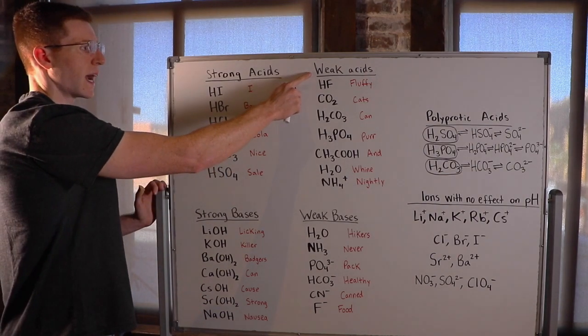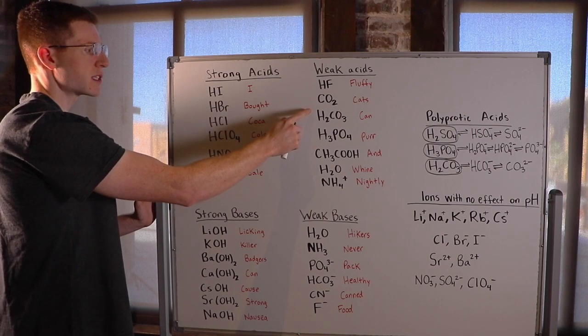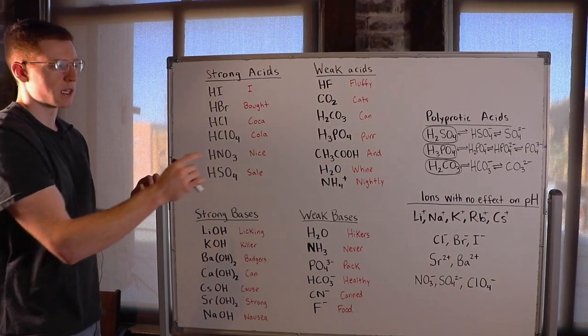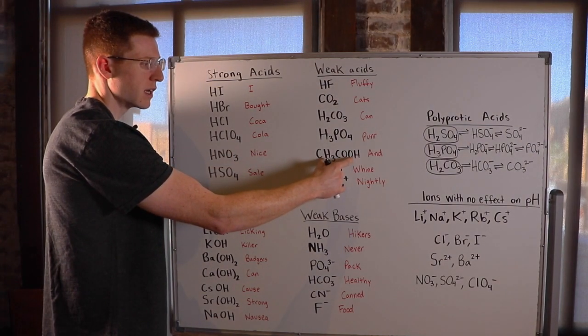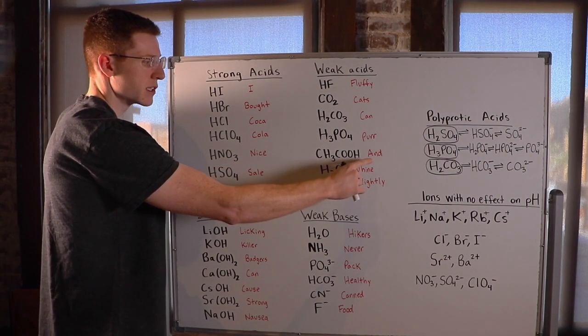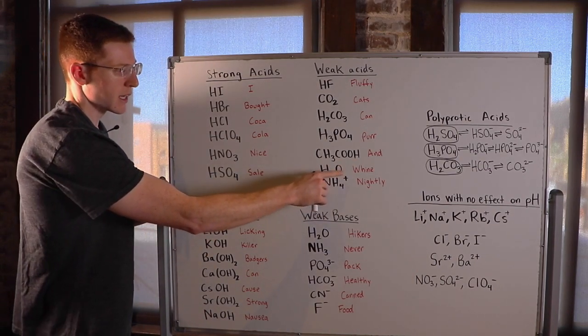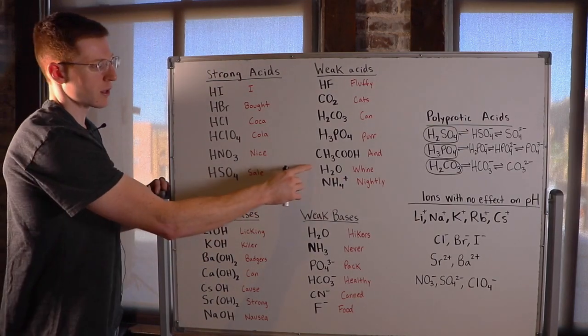Up here I've got the weak acids: fluffy cats can purr and whine nightly. So there are a few things to look closely at here. For example, acetic acid—I used 'and' for the A, so you have to know that this is acetic acid. And then for H2O, I used 'wine' for the W; it's supposed to clue you into the water.